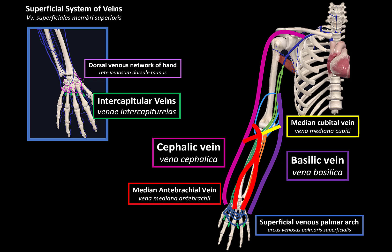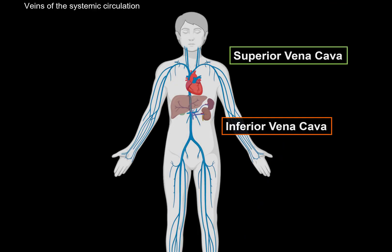So that was everything for the venous drainage of the upper limb. With that, we've finally covered all the veins of the superior vena cava. The next couple of videos are going to be about the inferior vena cava and the portal system.